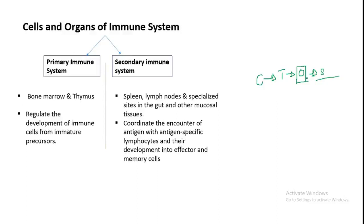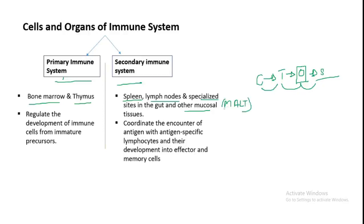The immune system has cells and organs. We know that cells form tissues and organs, then it becomes a system. The immune system is divided into primary immune organs and secondary immune organs. In the primary immune system we have bone marrow and thymus, and in the secondary immune system there are spleen, lymph nodes, and specialized sites in the gut — MALT.